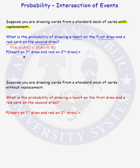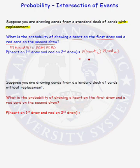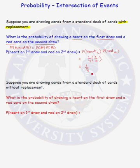The probability of drawing a heart on the first draw and a red card on the second draw equals the probability of drawing a heart on the first draw times the probability of drawing a red card on the second draw. There are 13 hearts out of 52 cards, so P(heart) = 1/4. There are 26 red cards out of 52, so P(red) = 1/2. Therefore the probability equals 1/8.